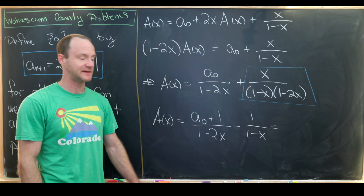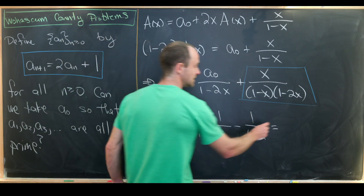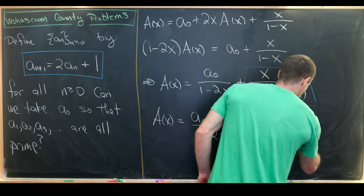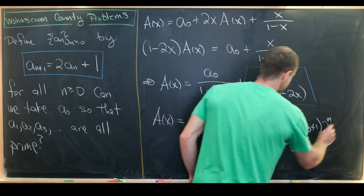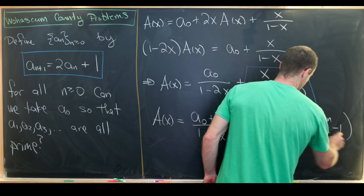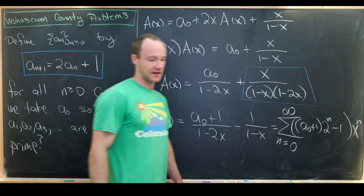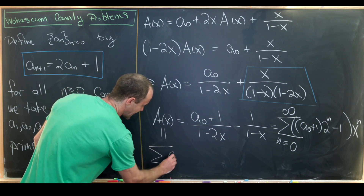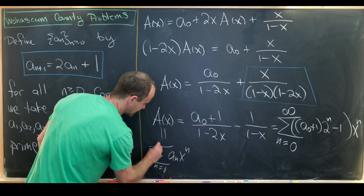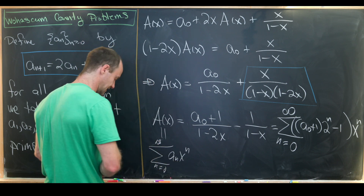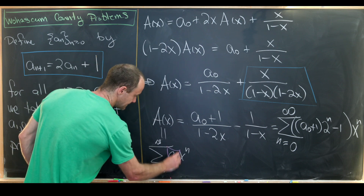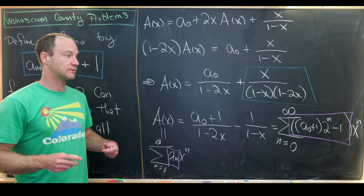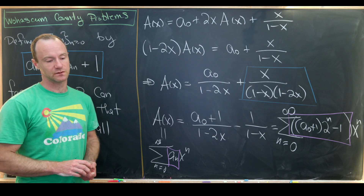Now we expand each as a geometric series. The first has common ratio 2x, the second has common ratio x. We end up with the sum as n goes from zero to infinity of [(a_0 + 1)·2^n minus 1] times x^n. Since a(x) equals the sum of a_n x^n, we equate coefficients, giving the closed form: a_n equals (a_0 + 1)·2^n minus 1.